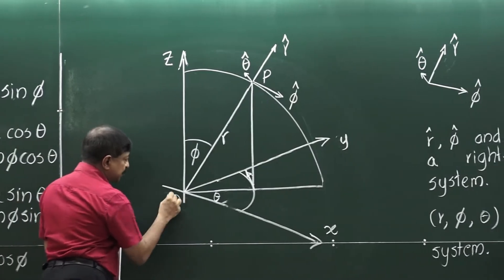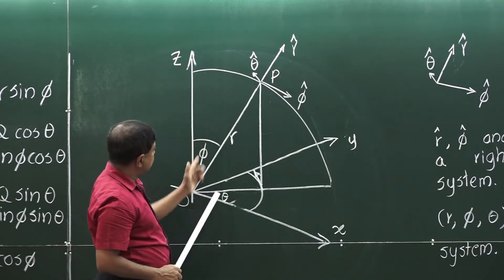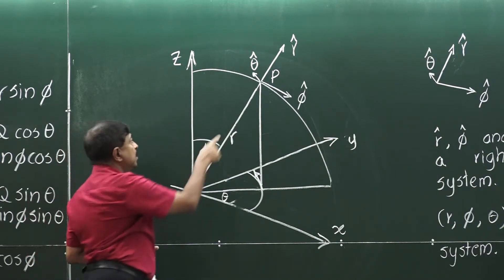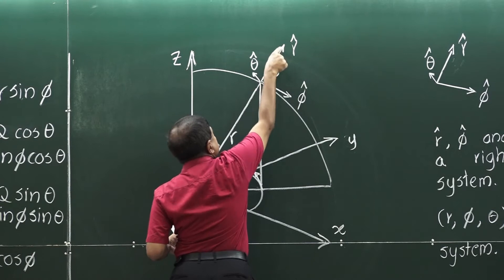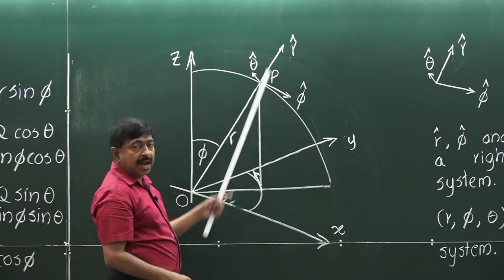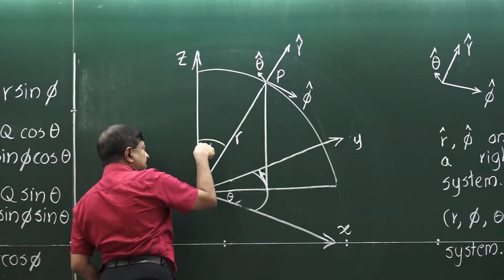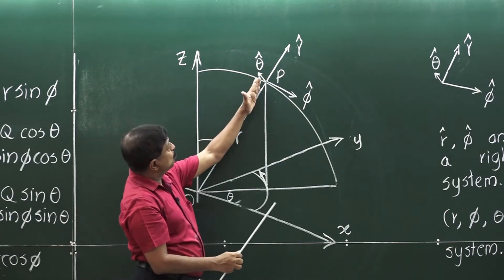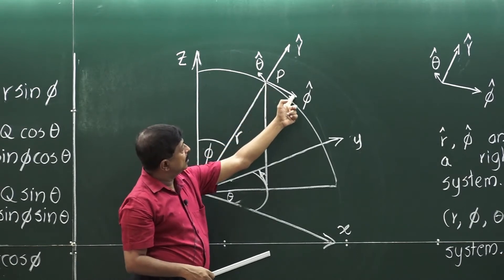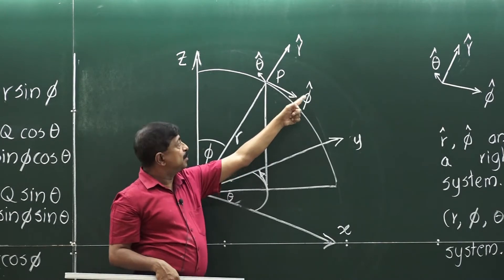The line segment connecting O and P is of length R. To increase the distance between O and P, you have to move along this direction. The unit vector along that direction can be taken as R hat. To increase phi, you have to move along that longitude this way, and the unit vector along this direction can be taken as phi hat.